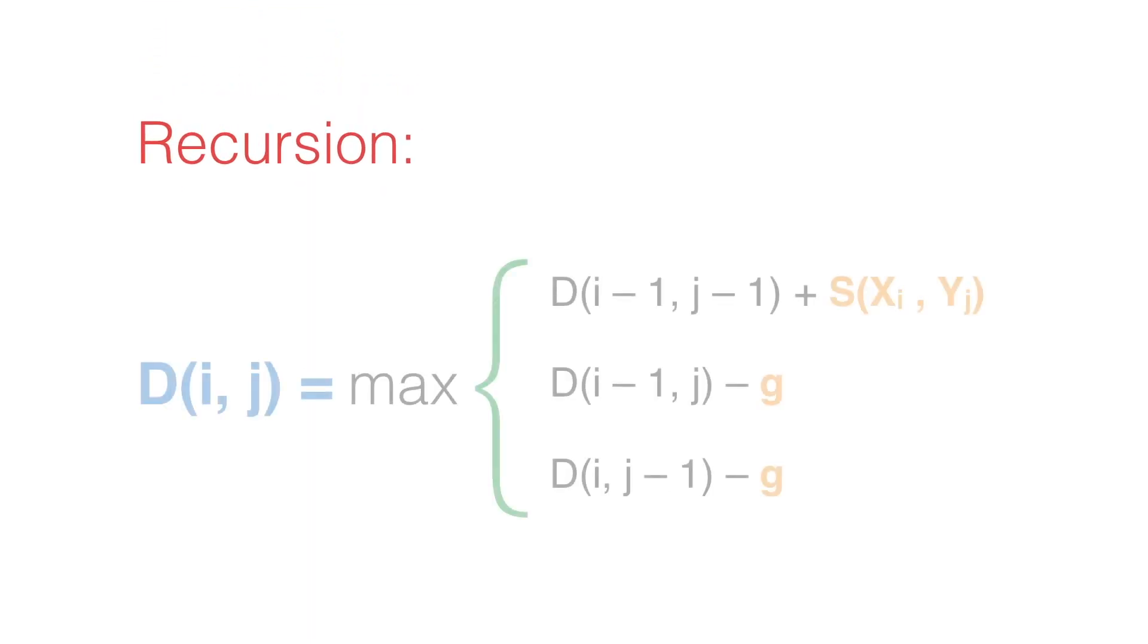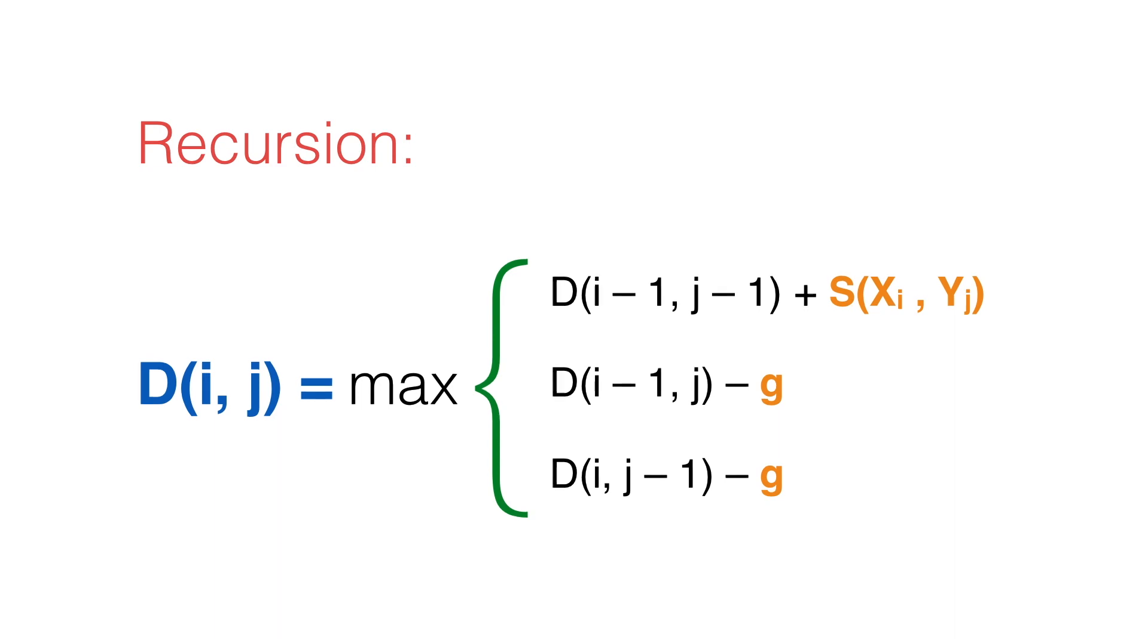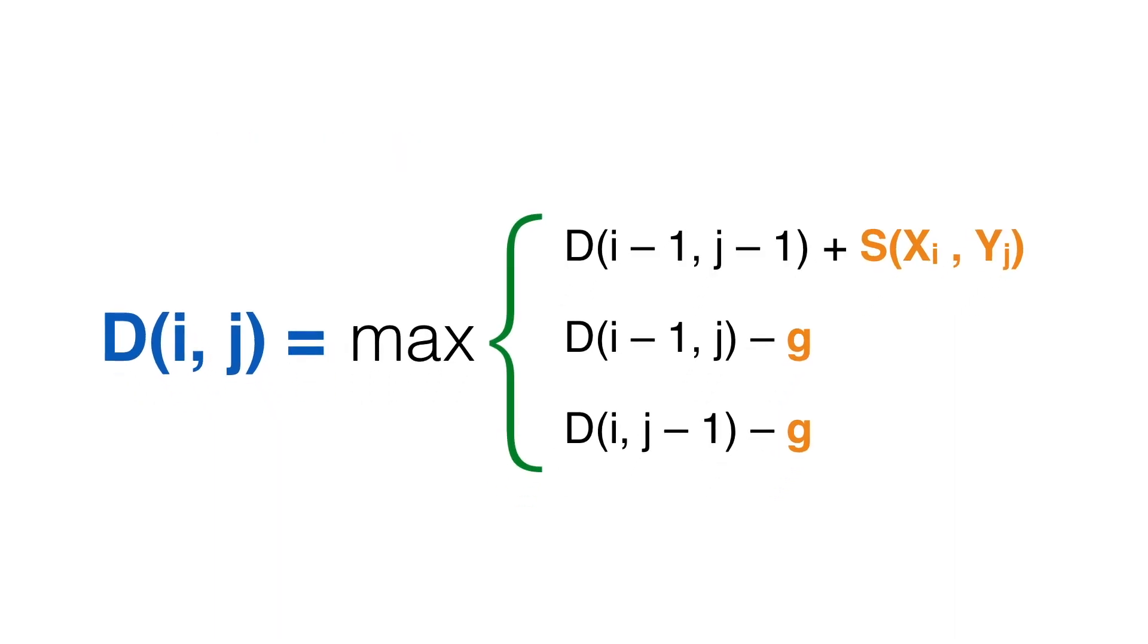What allows the reuse of smaller prefix scores to compute the score of larger ones is this recursive formula that relates the score of the alignment of prefixes from 1 to i-1 and 1 to j-1, from 1 to i-1 and from 1 to j, and from 1 to i and 1 to j-1 with the score of the alignment of the prefixes from 1 to i and 1 to j. Notice that with this formula, a small number of operations are necessary to compute the score D(i,j).